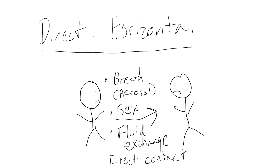Horizontal transmission occurs when a disease is spread from person to person through close contact. For example, infectious diseases may be spread through inhaling an infected person's breath or through fluid exchange, through skin-to-skin contact, or sexual intercourse.